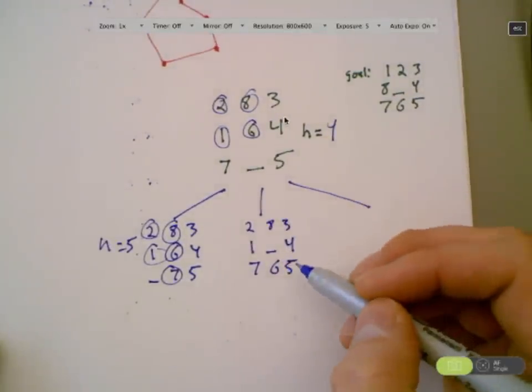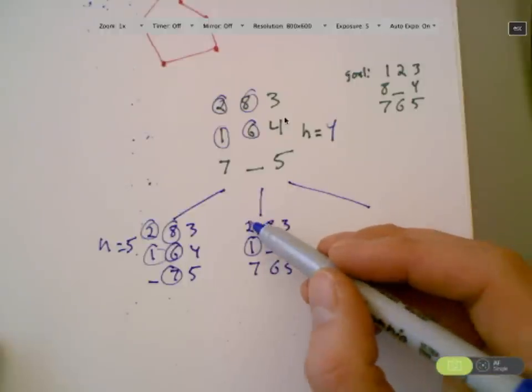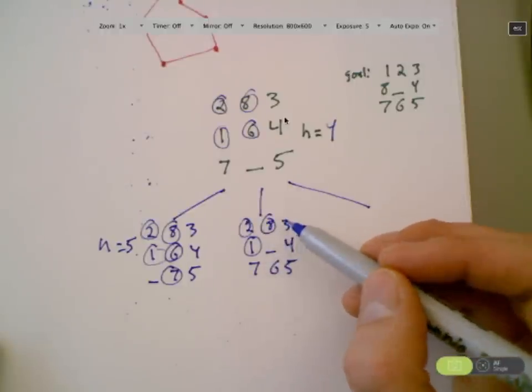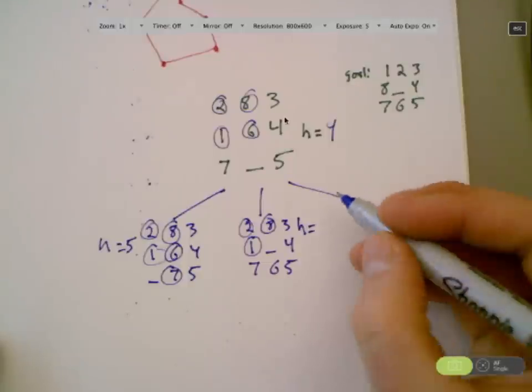And let's see, what's out of place here? That's out of place, that's out of place, that's out of place, and that's it. Let me get this right, h equals 3.